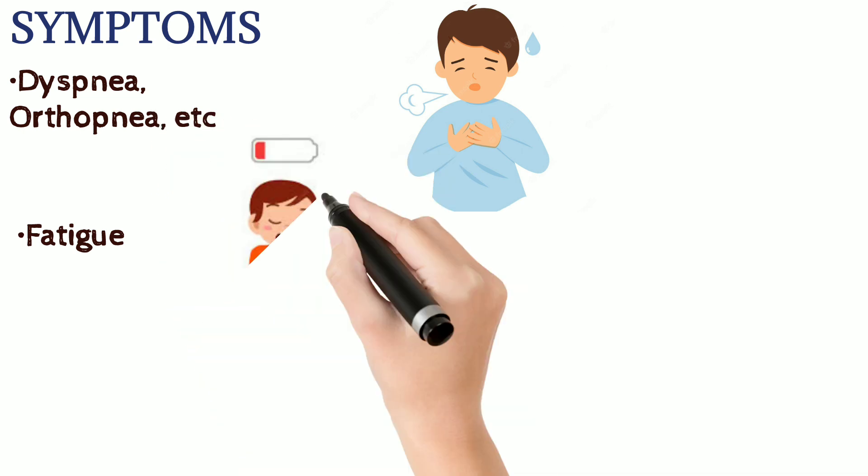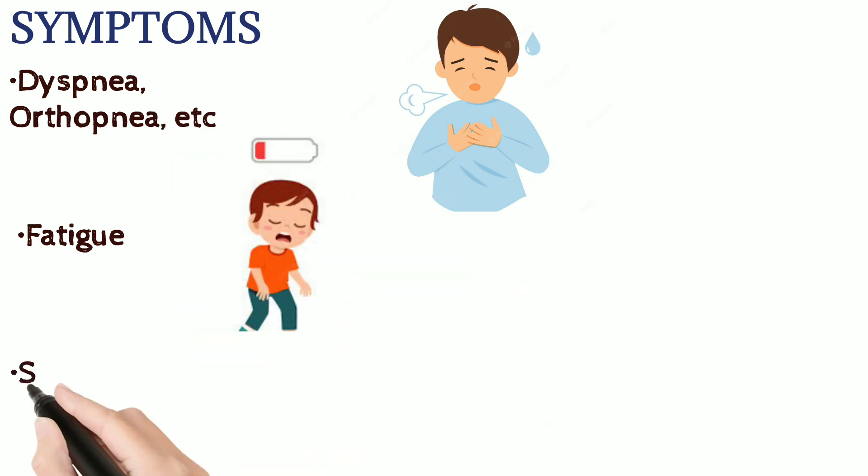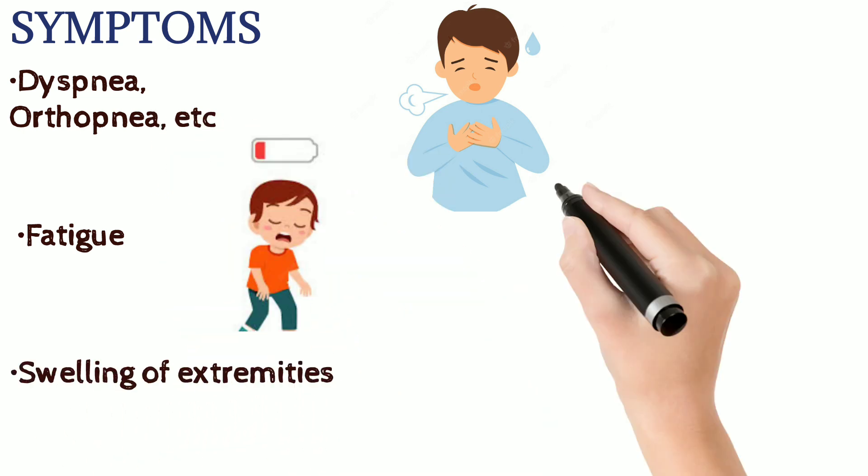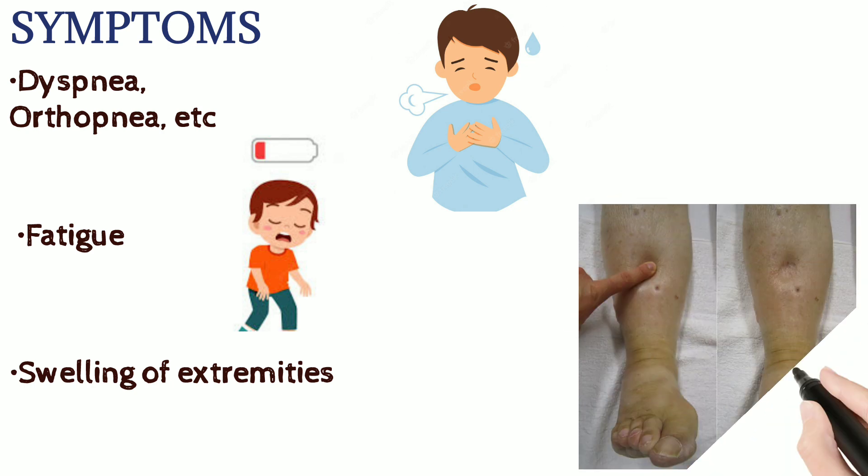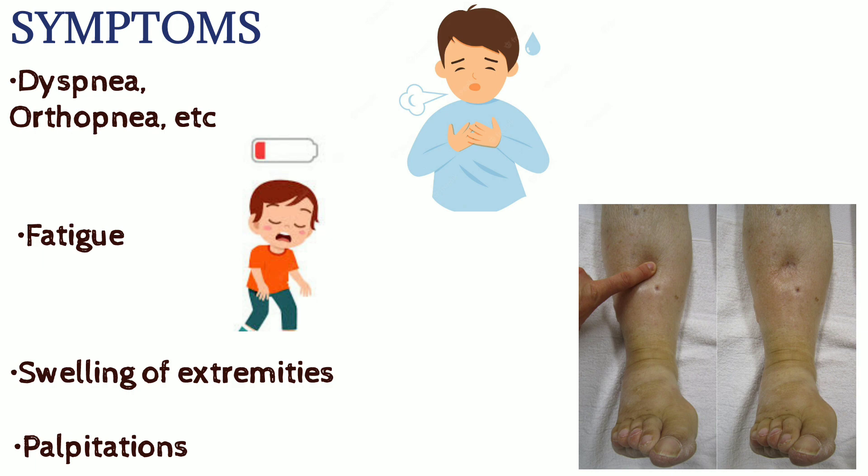Swelling of limbs, especially lower extremities, and having abnormal heartbeat or palpitations are also very common phenomena in congestive heart failure.